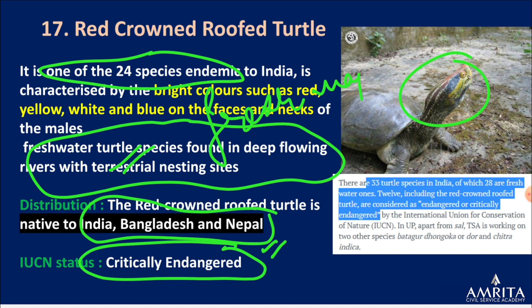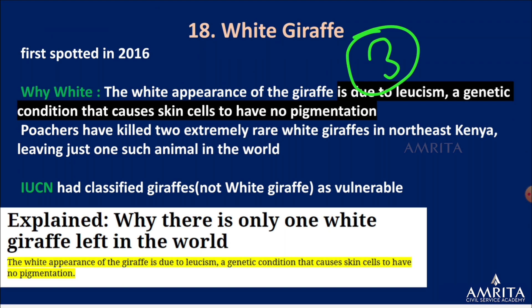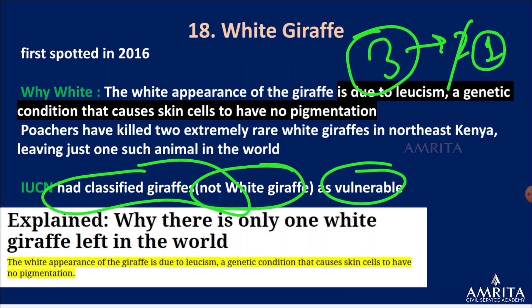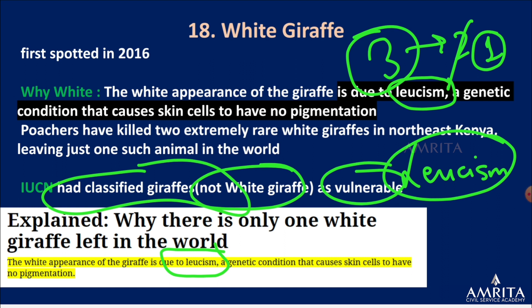White giraffe — there were three white giraffes and a poacher killed two, leaving only one. Normal giraffe is IUCN Vulnerable. White giraffe has no separate IUCN category because it is not a separate species — white coloration is due to leucism, a genetic condition causing reduced pigmentation, similar to how genetic conditions like thalassemia or Turner syndrome work.